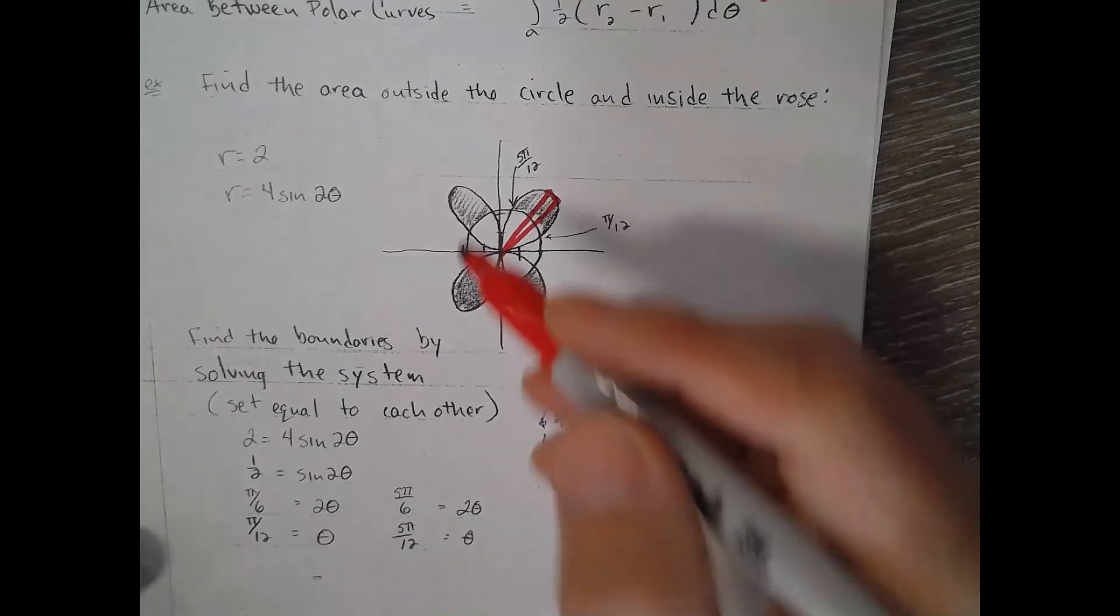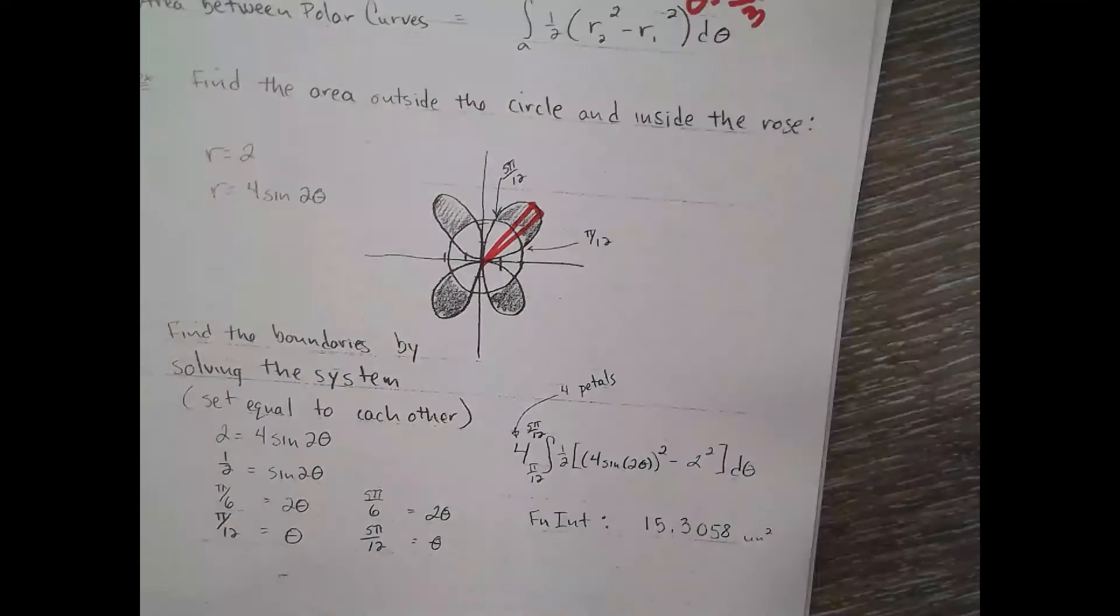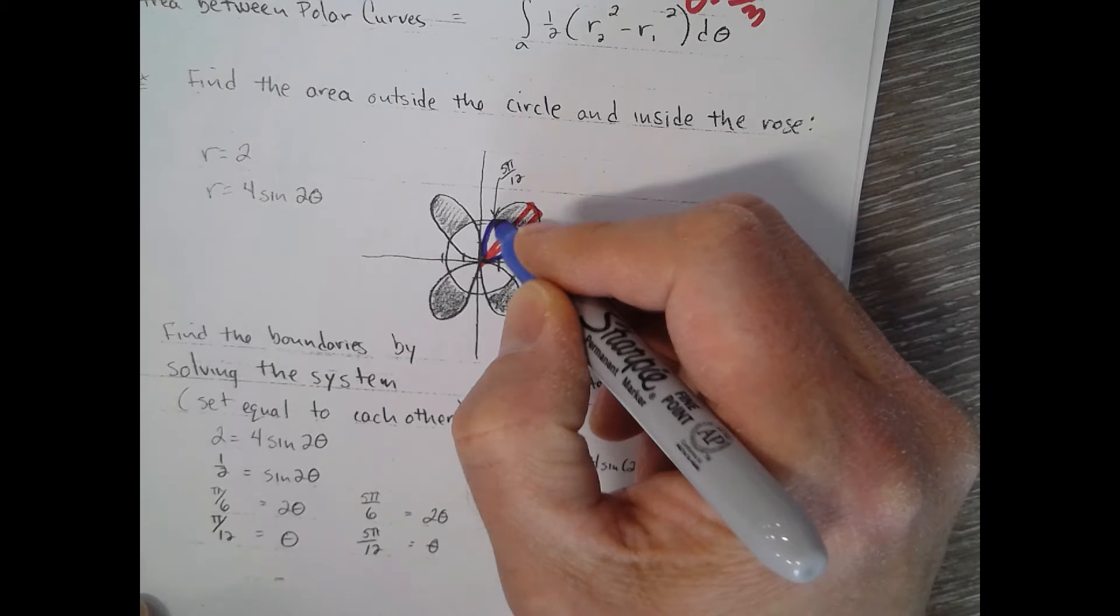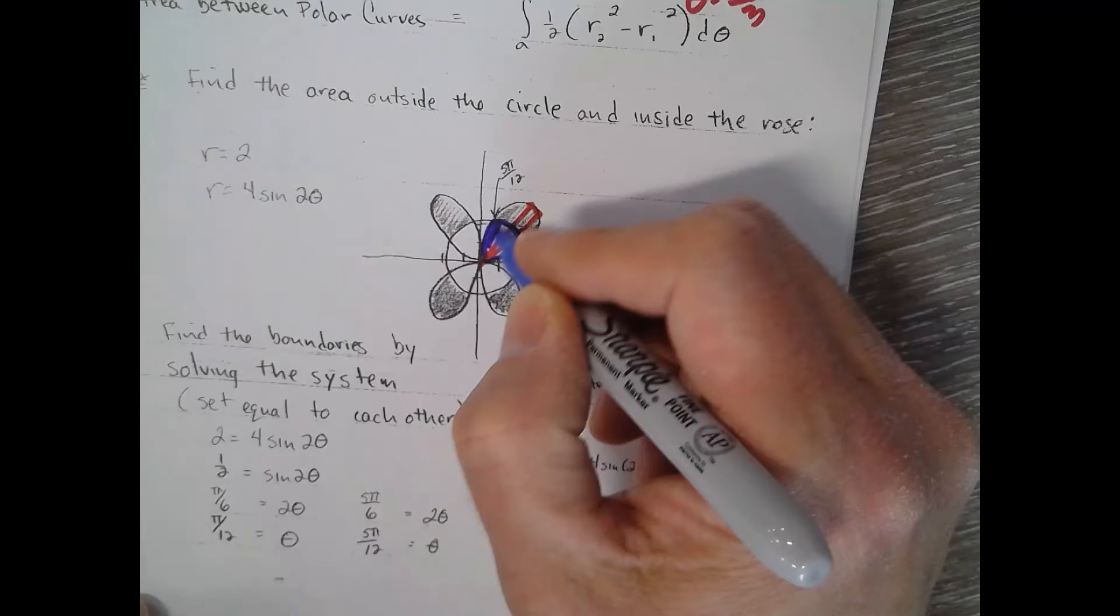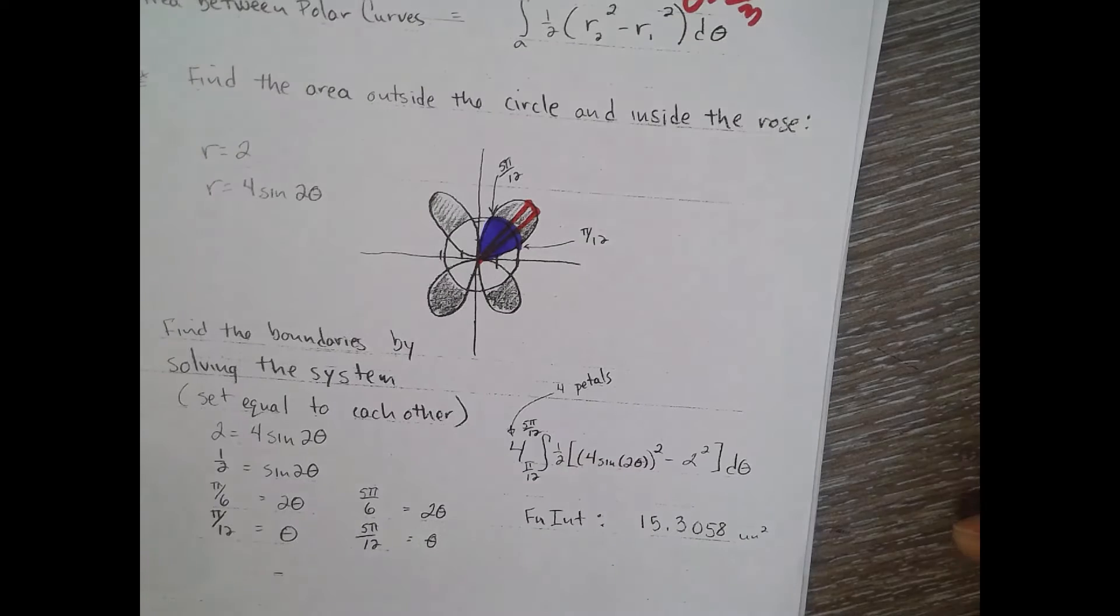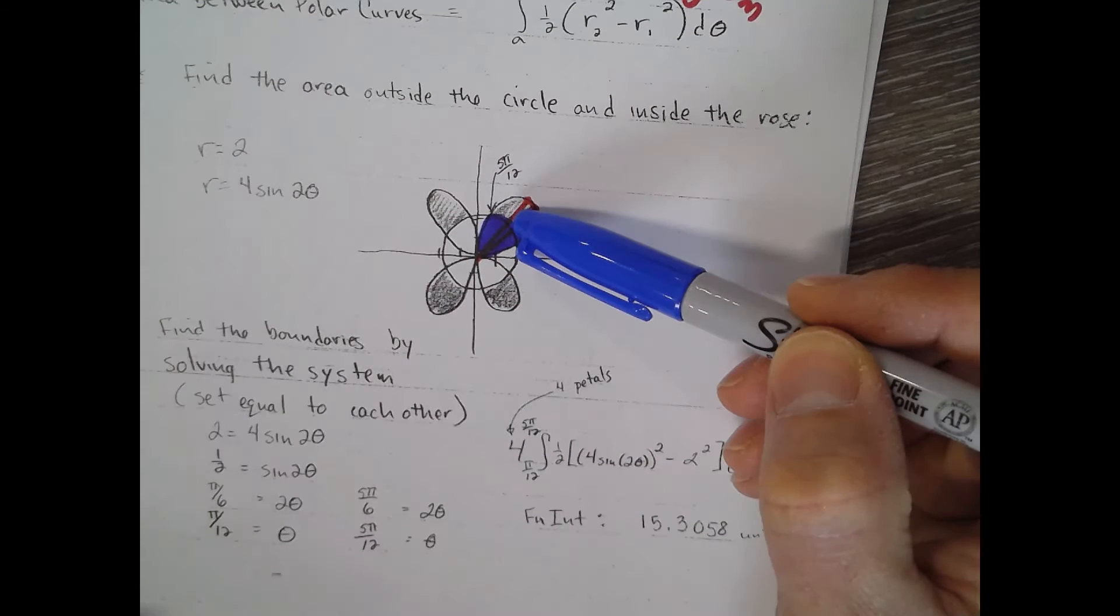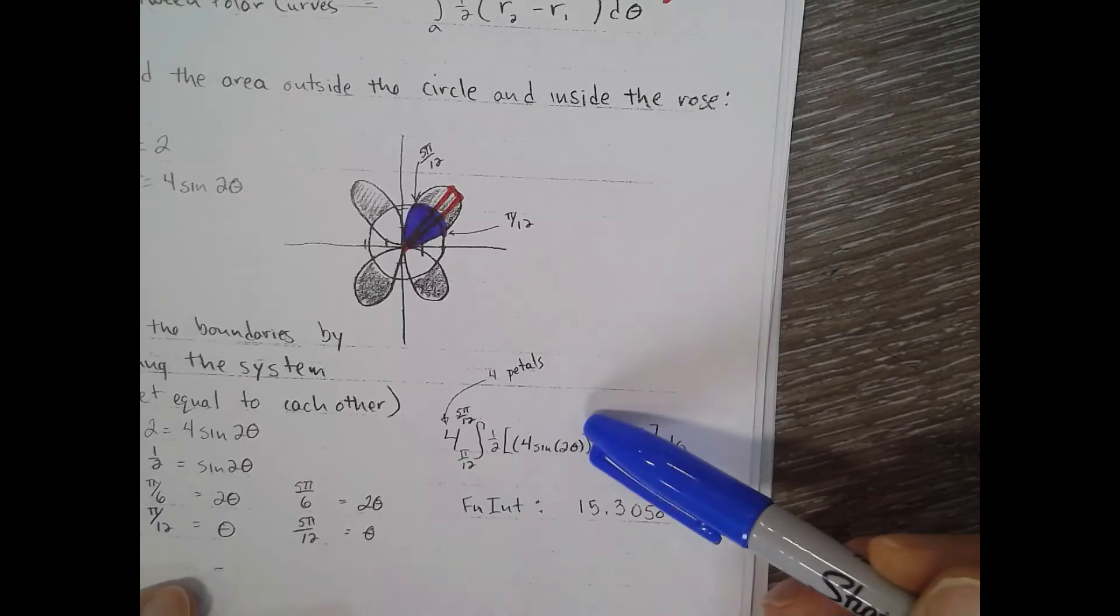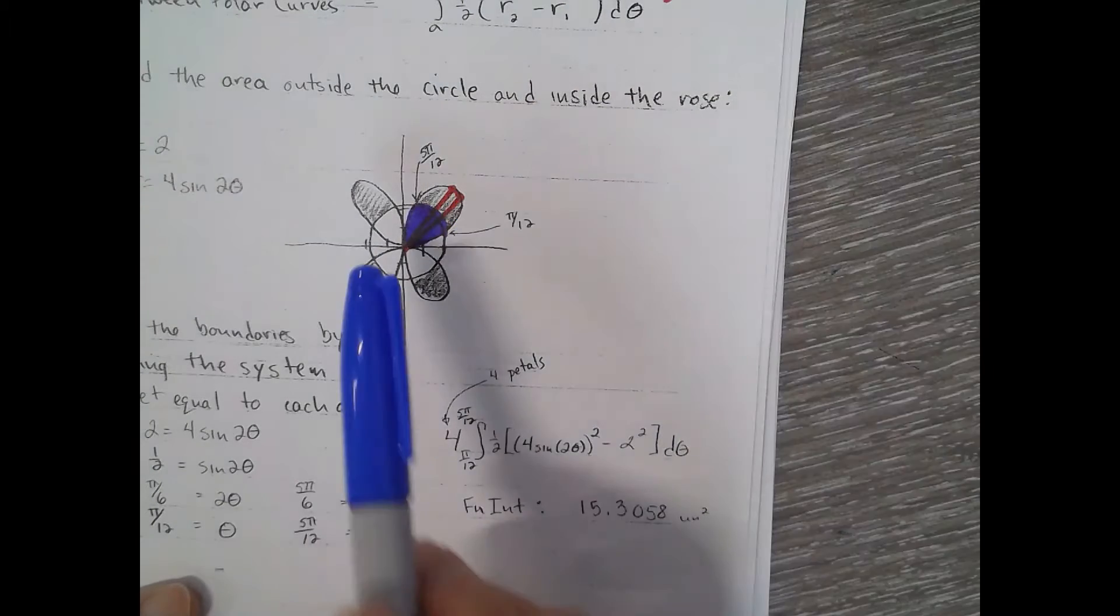All right, so what if we were looking for this blue area right here? How could I find that blue area? We could find the area of the whole petal minus the area of the shaded region, which this gets us the shaded region right down here, this integral that we found out. So that's one way of doing it.